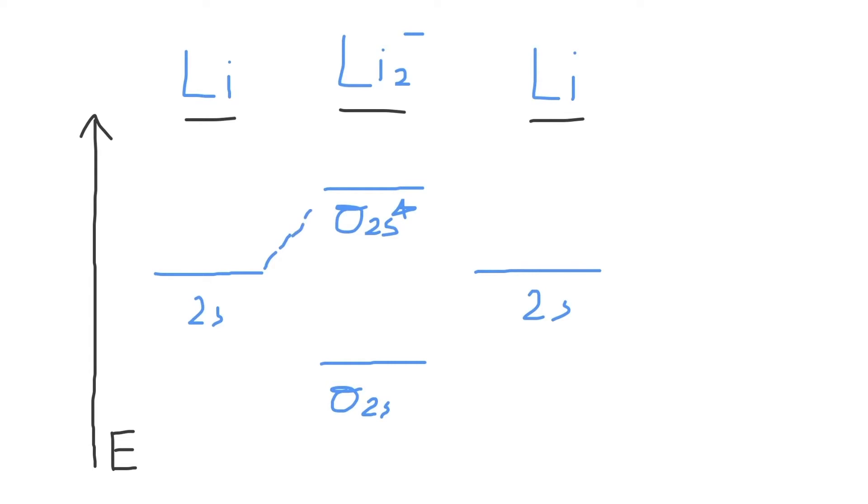Remember to connect your original atomic orbitals with your newly formed molecular orbitals. Next, we need to fill in our diagram with valence electrons. Each lithium atom has one valence electron, but because we're making an anion in Li2 minus, one of our lithium atoms must also be an anion.